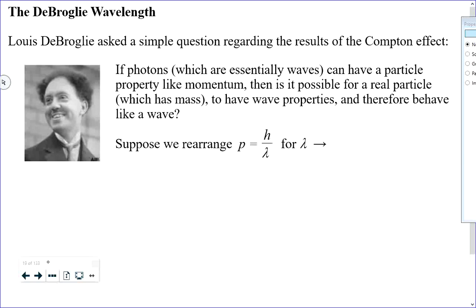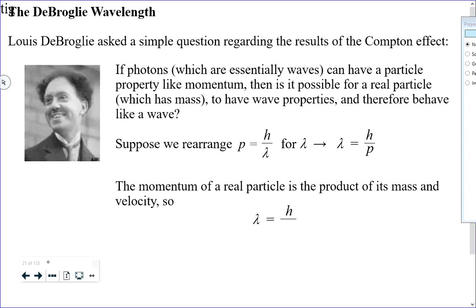What de Broglie did is he took Compton's formula for the momentum of a photon — which Compton demonstrated works — and rearranged it for lambda. He said the wavelength, according to this formula, is Planck's constant divided by the momentum. But if it's a real particle, momentum is defined in terms of mass and speed. So he substituted MV in, giving lambda equals h over MV. This formula is not on your formula sheet, so you need to memorize it.